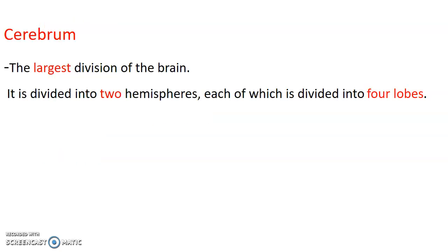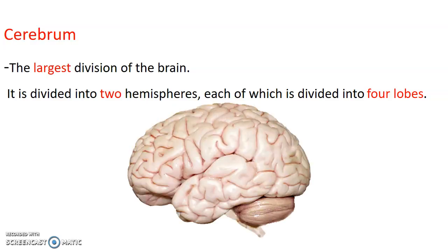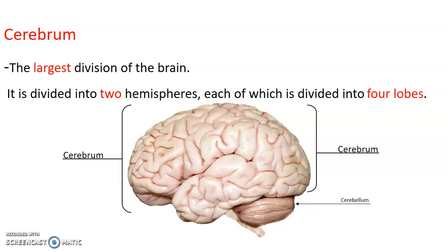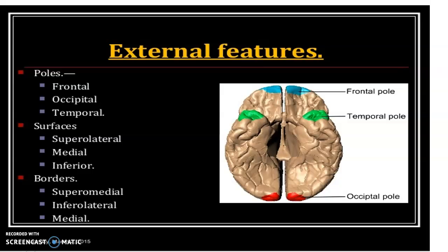The cerebrum is the largest division of the brain and it's usually divided into two hemispheres, the right and the left hemispheres, and each of these hemispheres is divided into four lobes. That pictorial presentation of the brain shows you the cerebrum, and below the cerebrum we have what we call the cerebellum.